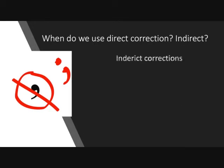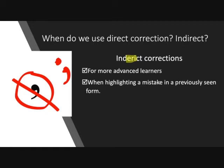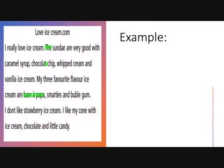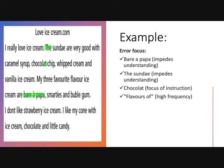What about indirect correction? Indirect correction is for more advanced learners — you want to just draw their attention to the mistake so that they can figure it out. It's also for highlighting a mistake in a previously seen form, like the chocolate example. I've highlighted 'the Sunday' and 'chocolate chip.' I've decided to correct 'the Sunday' directly because I'm not sure what they're trying to say, so I'll write 'Sundays' with a question mark. For 'favorite flavors of ice cream,' this is not something they'll be able to get on their own — it's a collocation — so I'll indicate they're missing something and write it in.